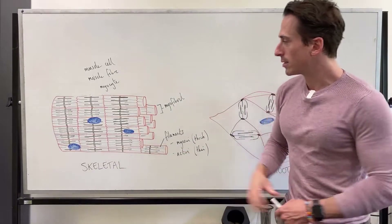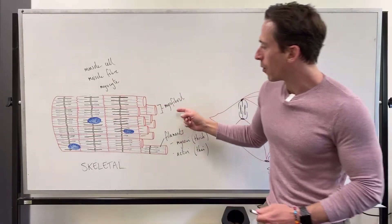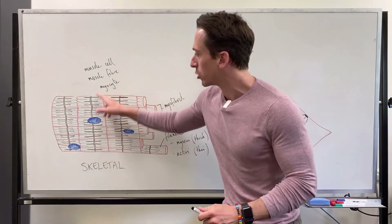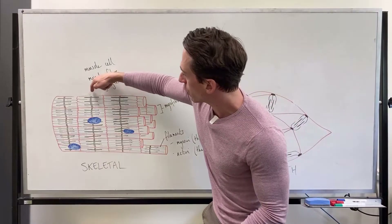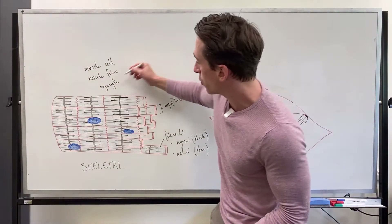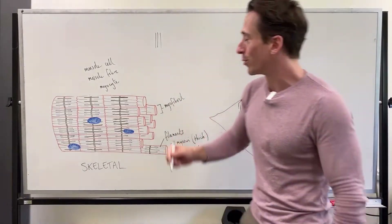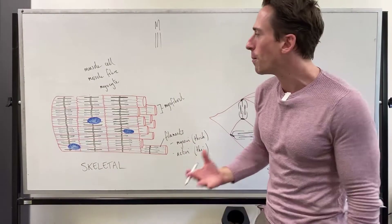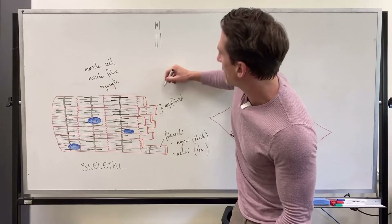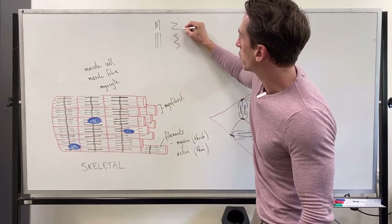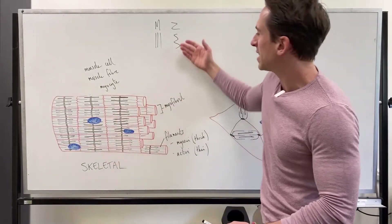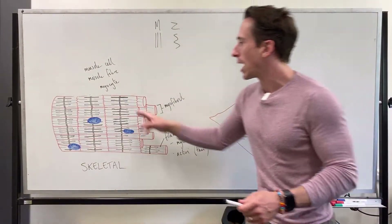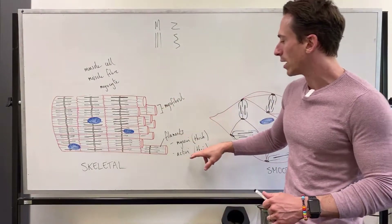These filaments are lined up parallel to one another from one myofibril to the next. The filaments are anchored to particular structural proteins. There's a line of structural proteins called the M line — I remember it because it looks like an M. And this line here is called the Z line, or Z disc — I remember it because it looks squiggly like a Z. The Z disc and the M line are simply anchorage points: the M line anchors the myosin, and the Z disc anchors the actin.